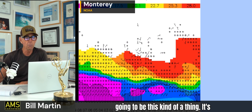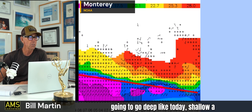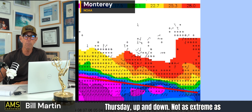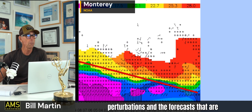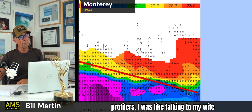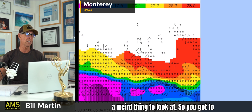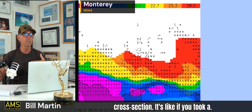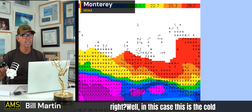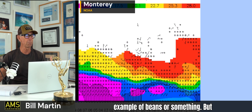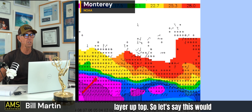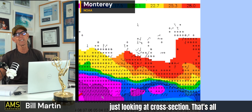This whole week is going to be this kind of a thing. It's going to go deep like today, shallow a little tomorrow, deeper again, shallow on Wednesday, deeper again, shallow on Thursday — up and down. Not as extreme as the heat that we saw. It's not going to be hot, hot. But we're going to have these perturbations. So that's the profiler. I was talking to my wife about it — you've got to think three-dimensionally. It's like if you took a burrito and cut it down the middle and you have all those layers. In this case, this is the cold layer here — a cross-section. That's all I can tell you.